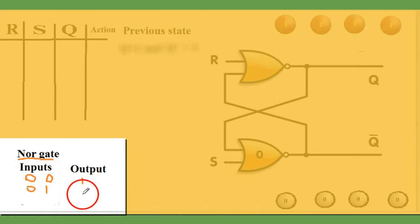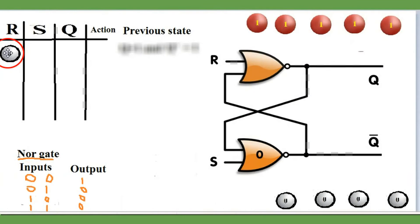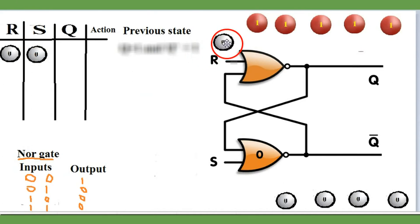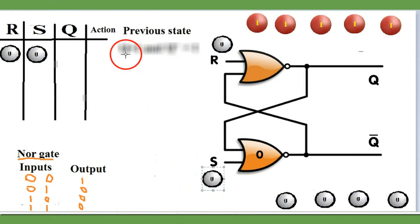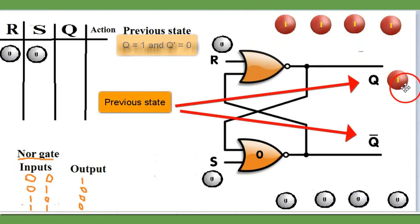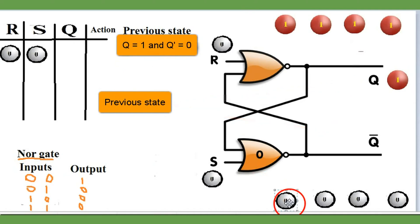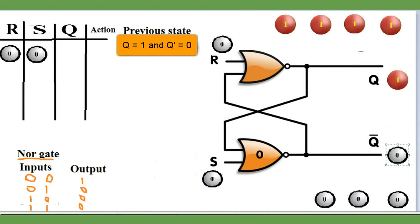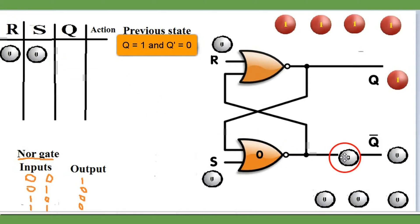First, recall the NOR gate logic: 0-0 gives 1, 0-1 gives 0, 1-0 gives 0, and 1-1 gives 0 — all zeros except 0-0 which gives 1 only. Remember the NOR gate logic. Now let's start with R and S both equal to 0. Before discussing the output, we need to observe the previous state. Let me assume Q is 1 and Q-bar is 0. Q-bar is the complement of Q, so if Q is 1, Q-bar will be 0.